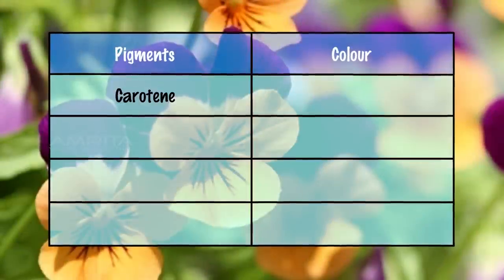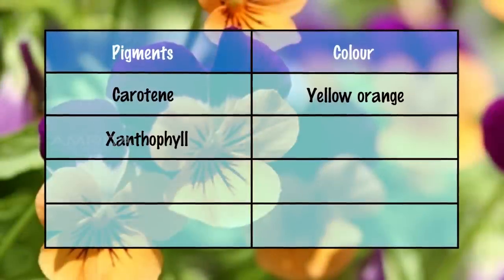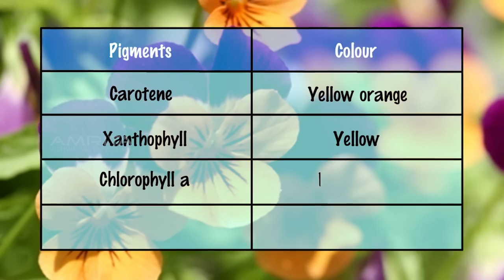Different plant pigments can be separated by using the technique of paper chromatography.